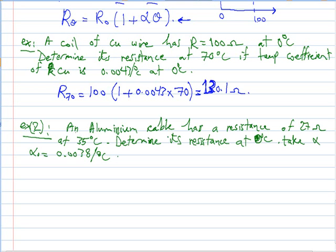Here is another example: An aluminum cable has a resistance of 27 ohm at 35 degrees Celsius. Determine its resistance at 0 degrees Celsius. Take the temperature coefficient as 0.0038 per degree Celsius.